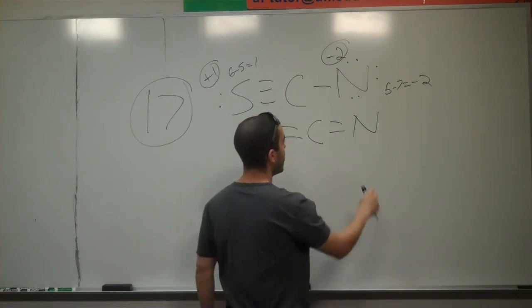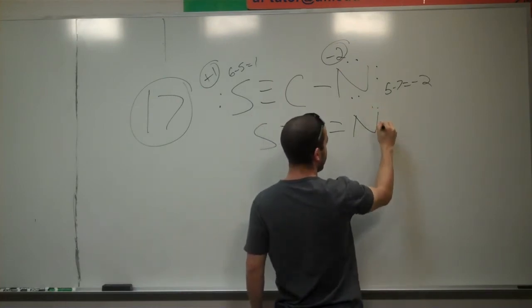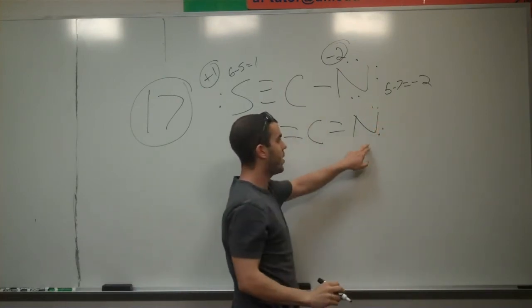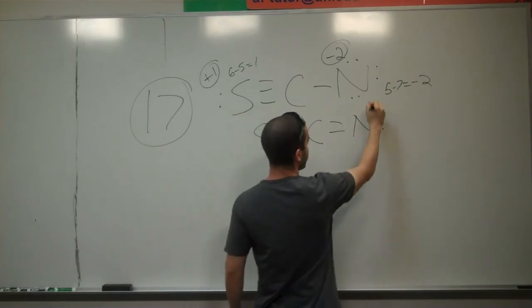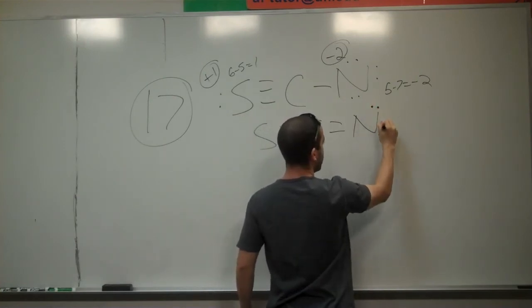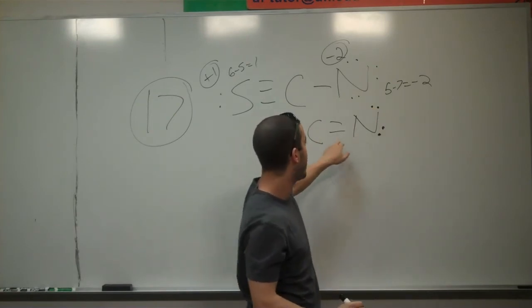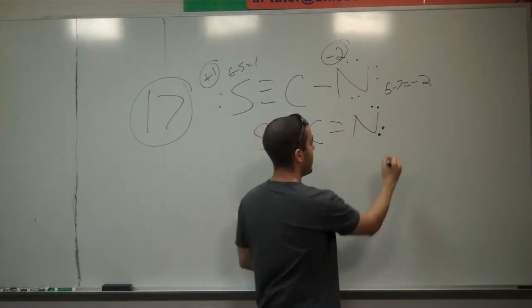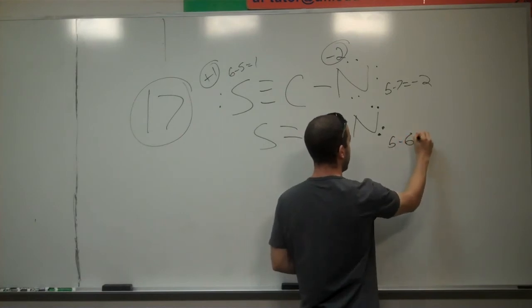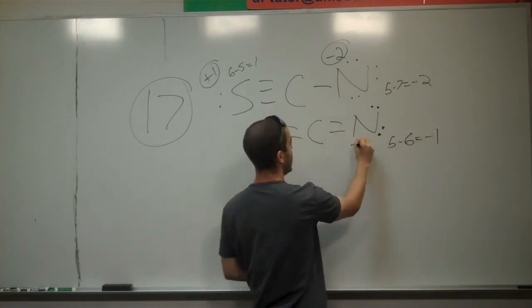Let's draw the other type of system. We'll put two lone pairs on this nitrogen. I guess I should draw them bigger. Two lone pairs on here, which makes this thing five minus six, negative one. So this has a negative charge on it now.